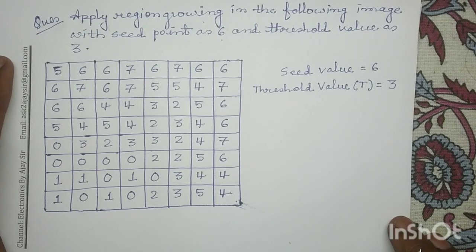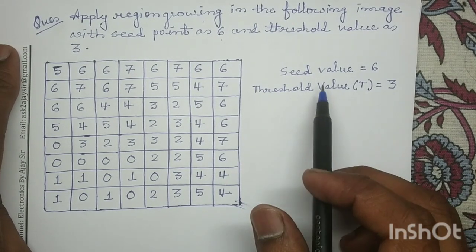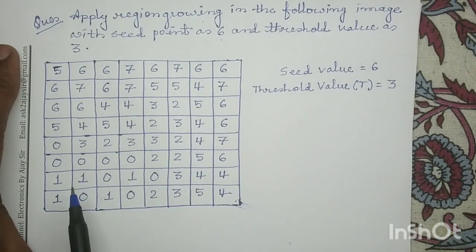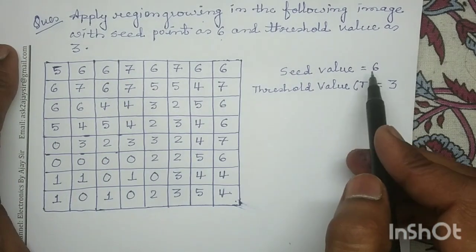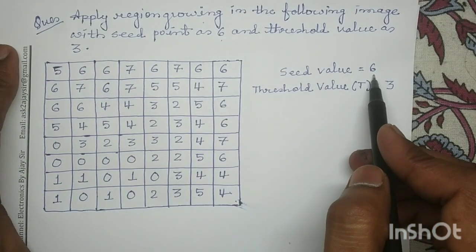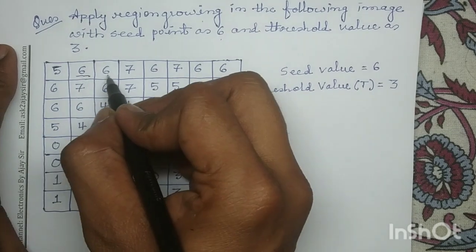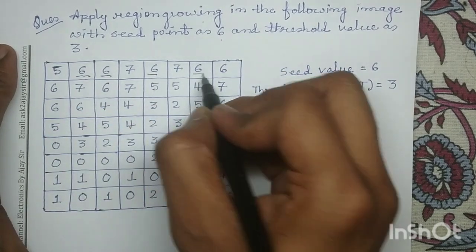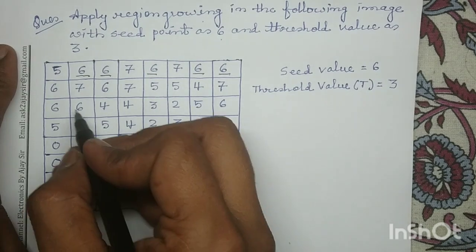So the seed value is 6 and the threshold value is 3. In step 1, we have to identify the seed value 6 in this given digital input image. We will mark all the seed points which have the pixel value 6.